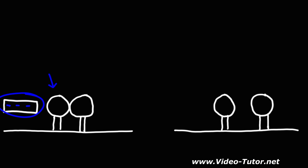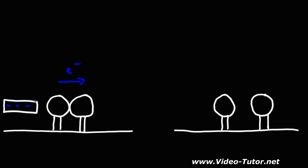These two metal spheres are initially in contact with each other but they're neutral. Once we bring the negatively charged metal rod closer to the first metal sphere, the electrons in the two metal spheres are going to be repelled by the electrons in the metal rod, so they move away from it. Sphere number two develops a net negative charge, and sphere number one on the left develops a net positive charge as electrons leave it.